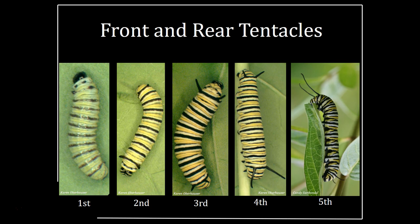Another helpful indicator is the length of the rear tentacles. The rear tentacles are about as long as the front tentacles from the previous instar. For example, the rear tentacles on the second instar are about the same length as the front tentacles on the first instar.